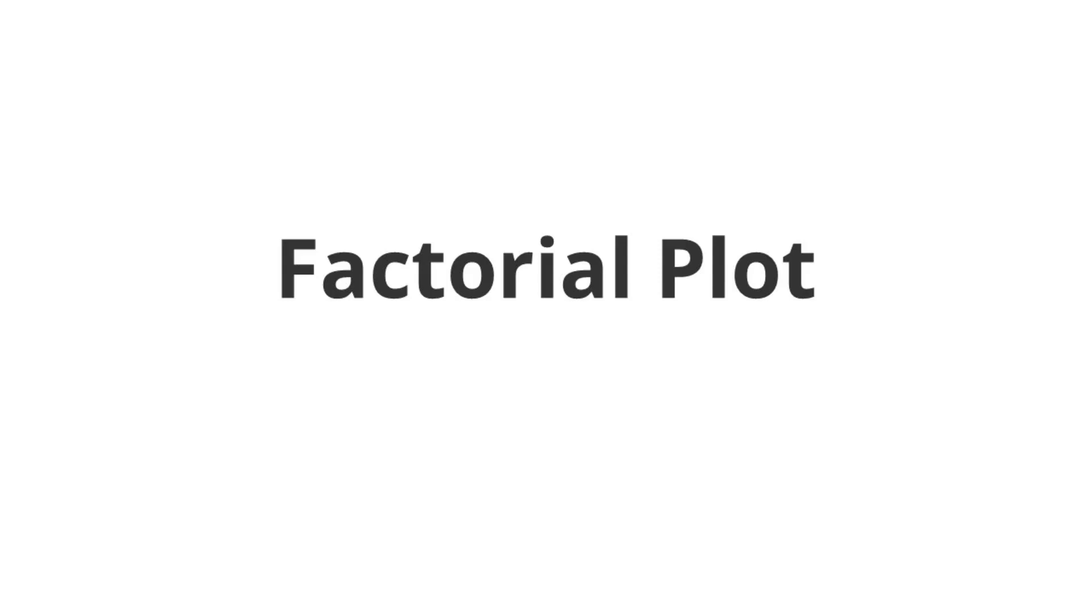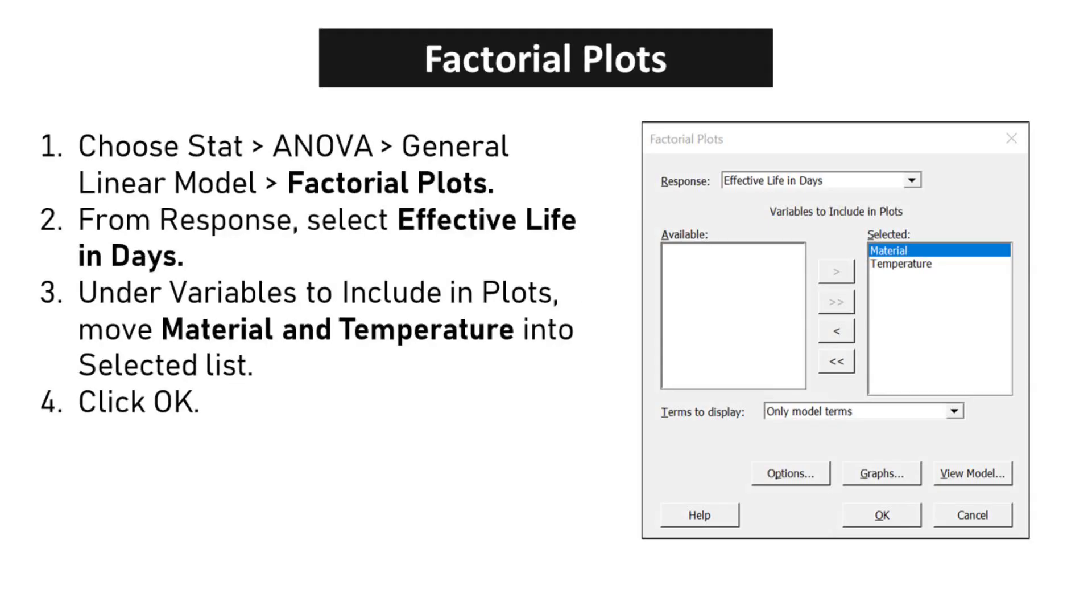Factorial Plot. Choose Stat, ANOVA, General Linear Model, Factorial Plots. From Response, select Effective Life in Days. Under Variables to Include in Plots, move Material and Temperature into Selected List. Click OK.